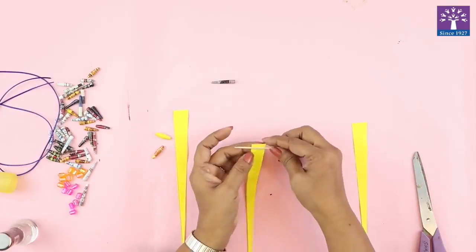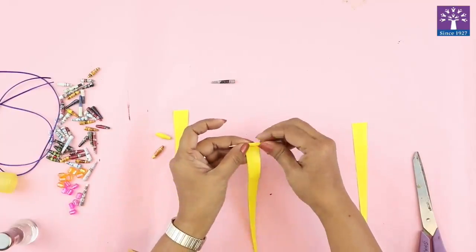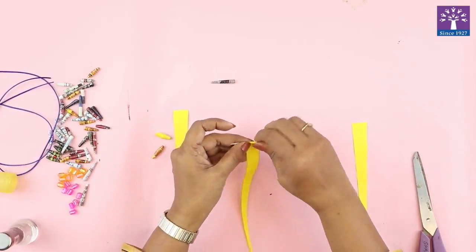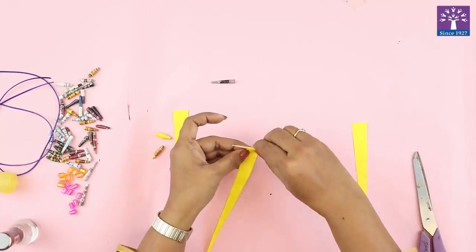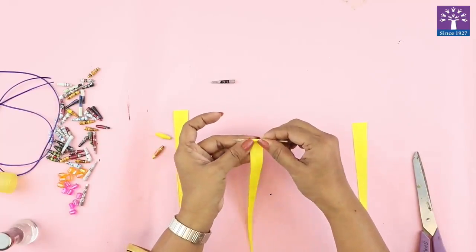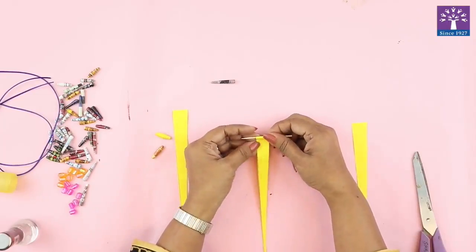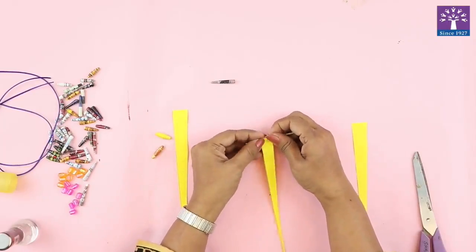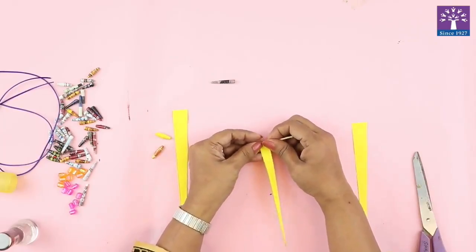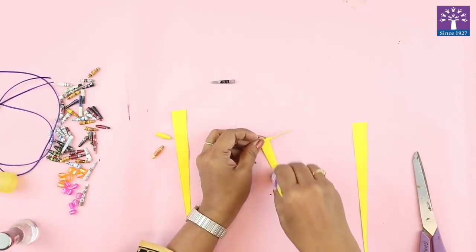And we will start rolling this bead. See that this line is very steady and straight. Apply glue at the intervals.